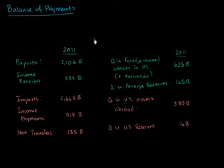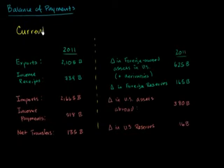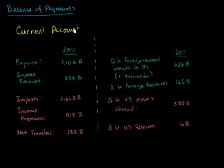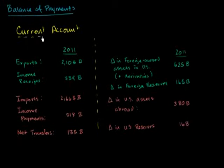For this video, I'm going to first focus on the left-hand side — the current account. The current account focuses on things related to trade, so exports and imports; things related to income in that period, so if I'm getting dividends from a stock that's a German company, or if someone in Germany is getting dividends from a stock that's an American company; and just transfers of money — like if I give money to my mom in France to help support her.